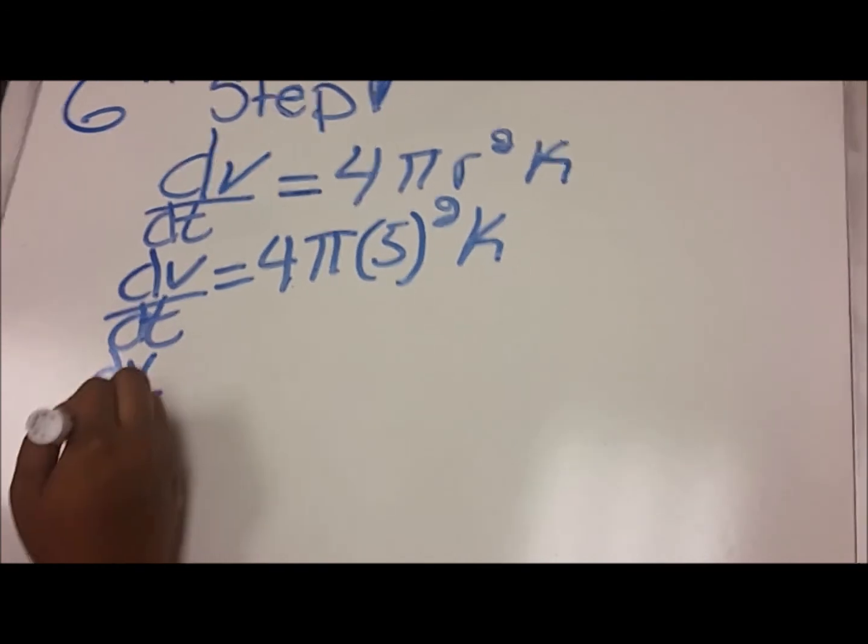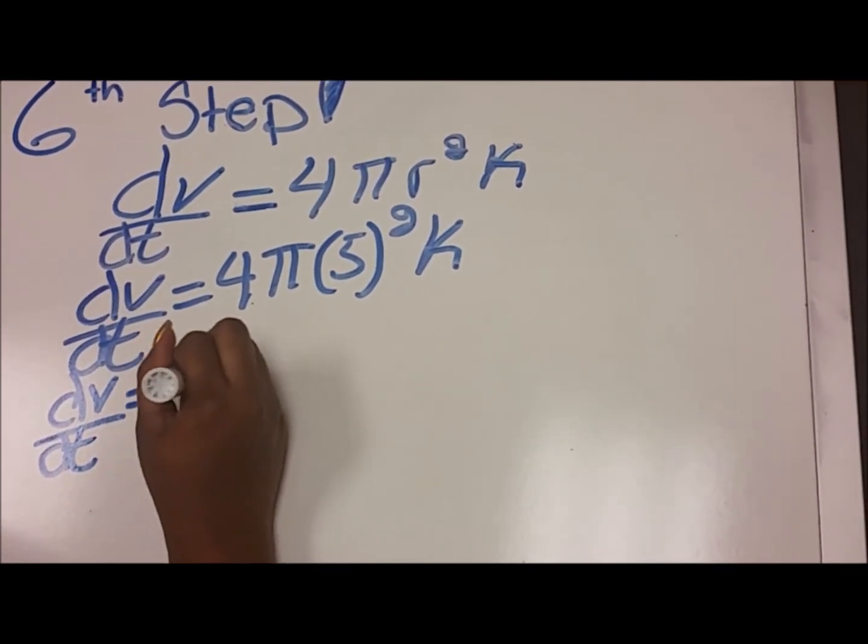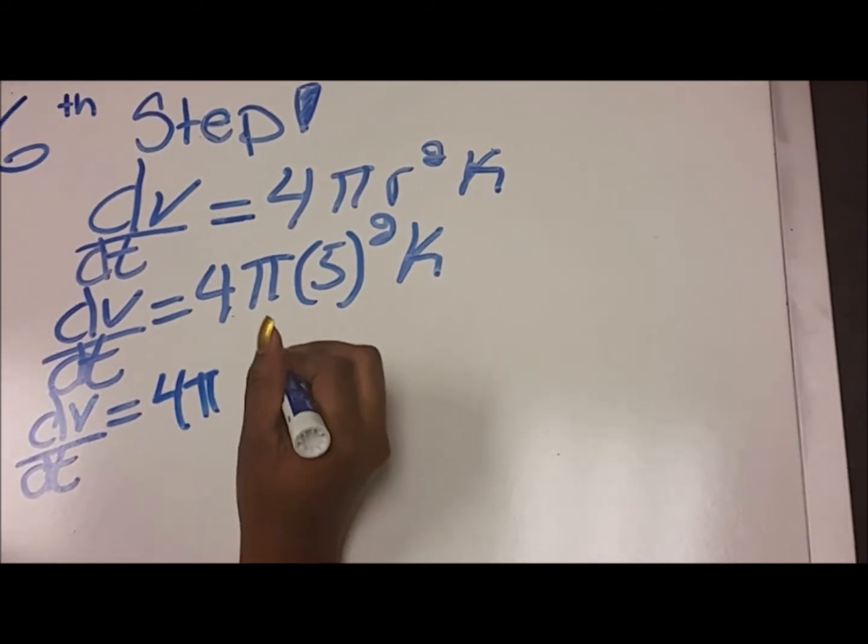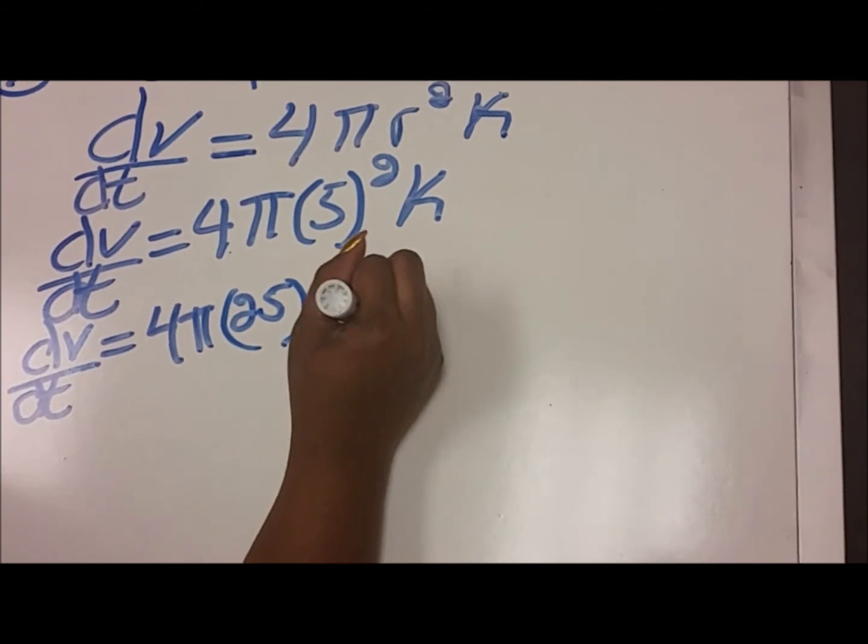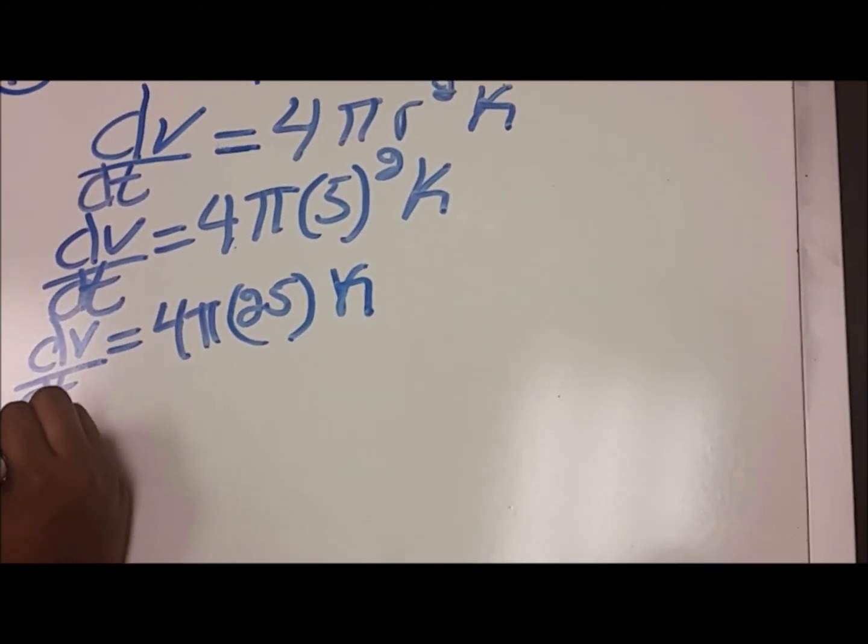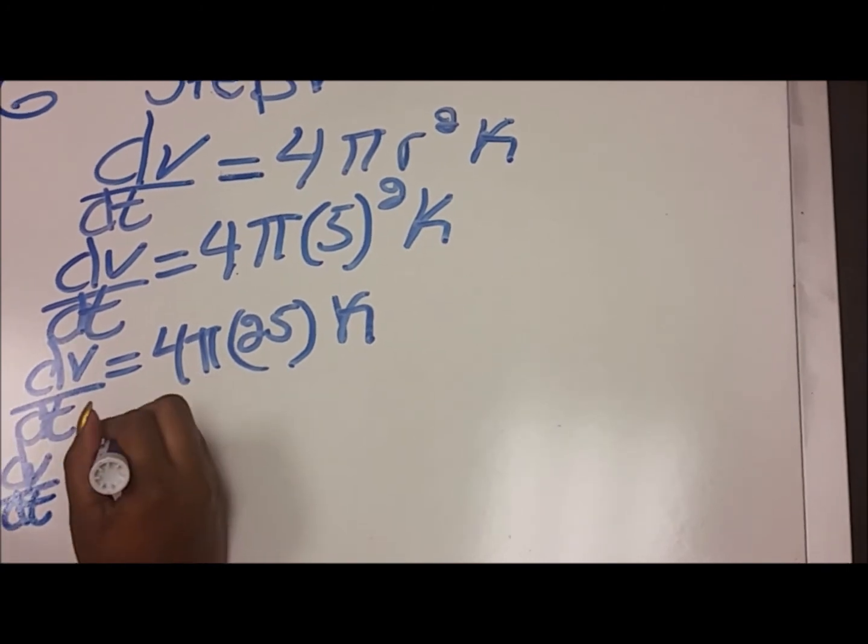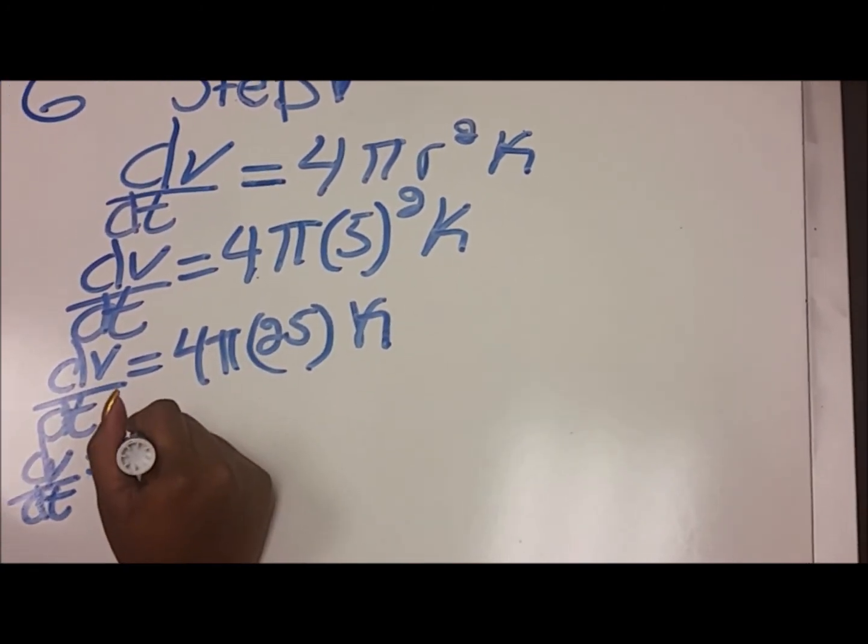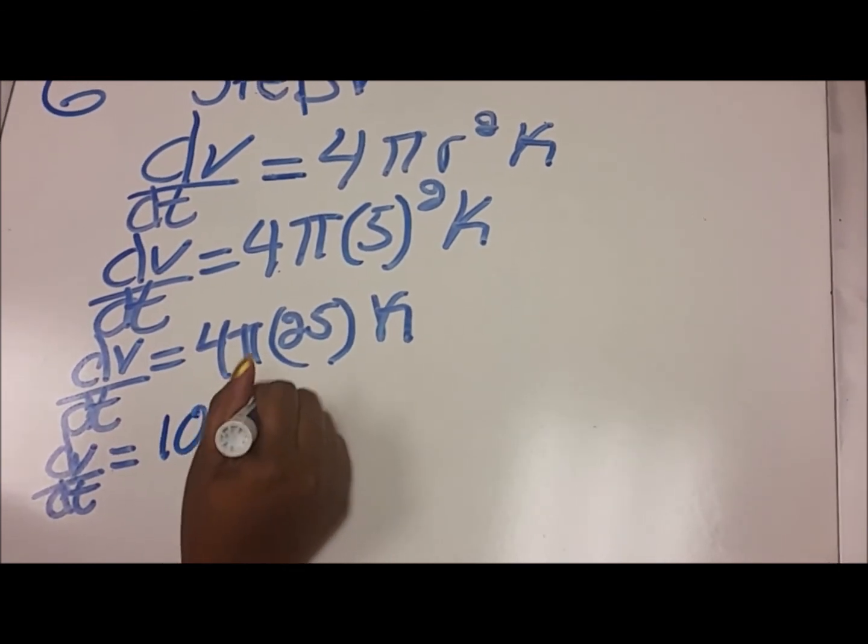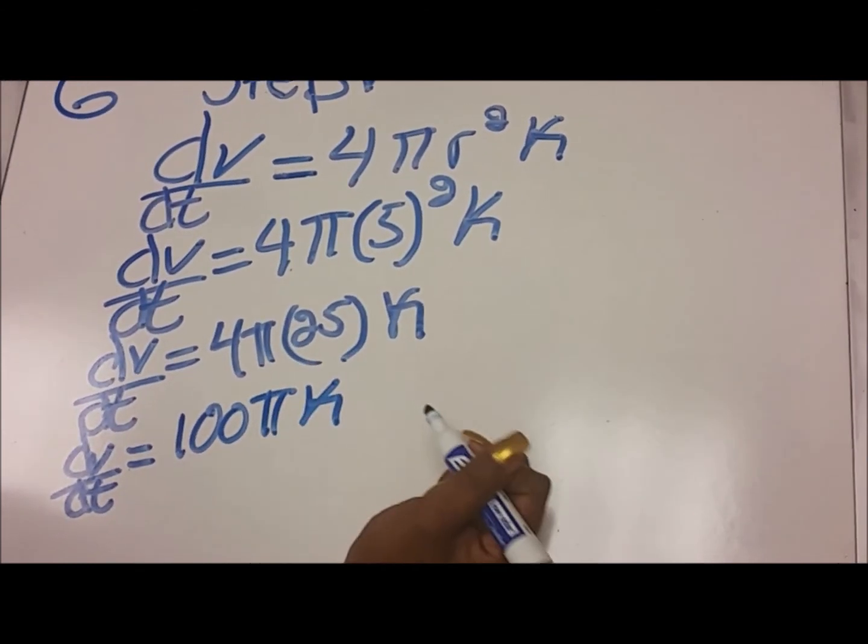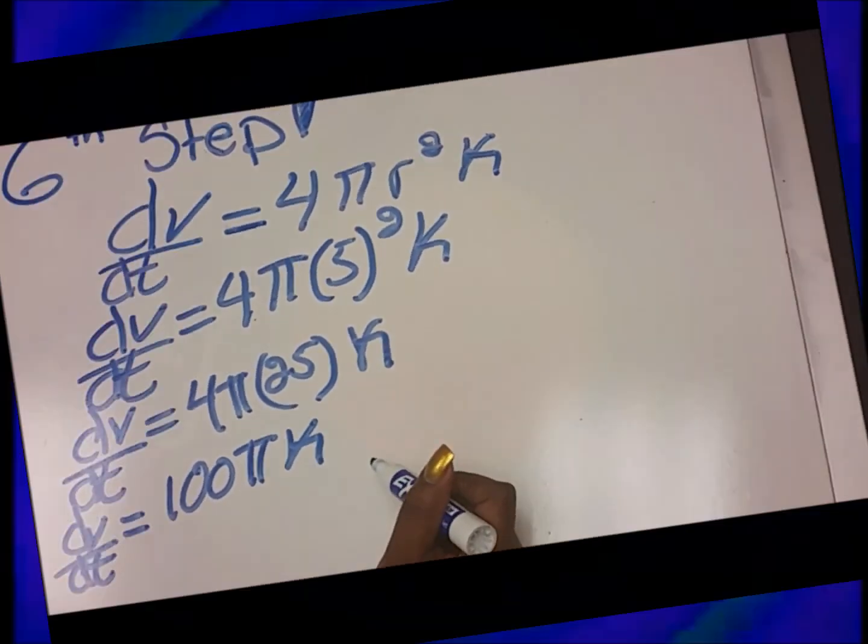dv dt is equal to 4 pi times 25, which is 5 times 5, times k. dv dt is equal to 4 times 25, which is 100, pi k. And this is our rate of growth of the tumor.